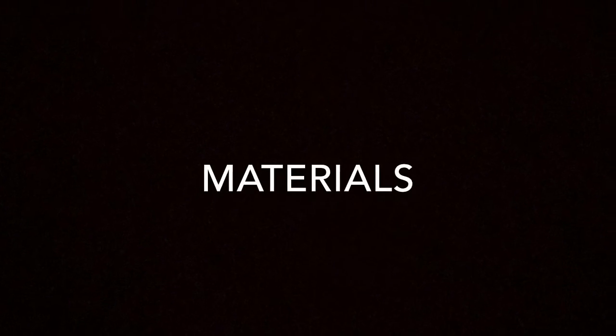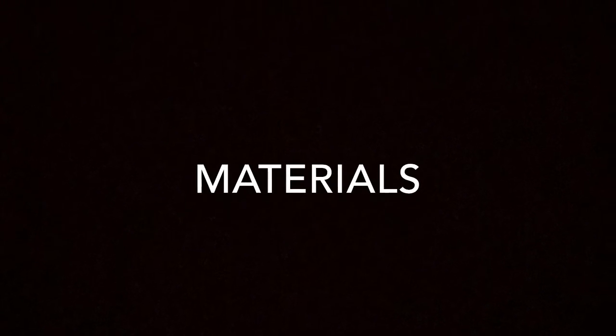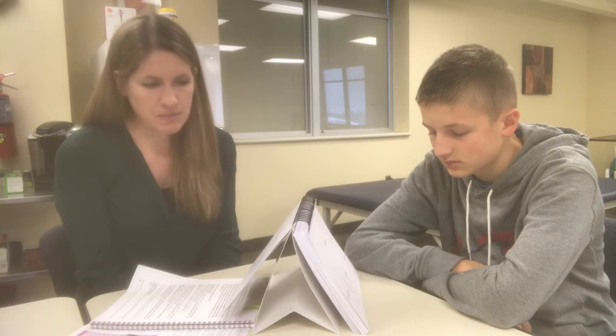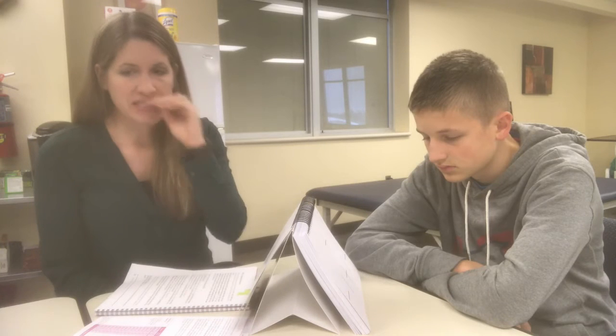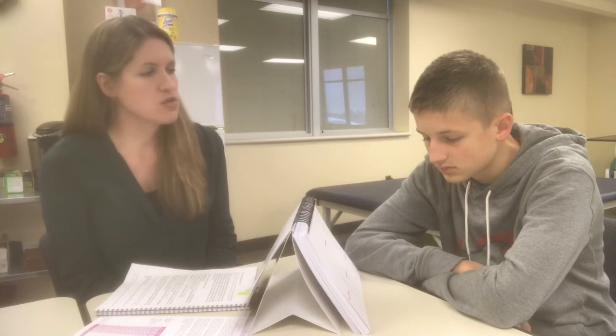Hi, my name is Jennifer. I'm here with my client Tag to demonstrate a visual perceptual assessment used in occupational therapy practice. Today Tag and I will demonstrate the Test of Visual Perceptual Skills, also known as the TVPS-3. The materials included in the assessment are the examiner's manual, the test booklet, and the scoring sheet. This assessment is intended to measure various aspects of visual perceptual ability in children between the ages of 4 and 18.